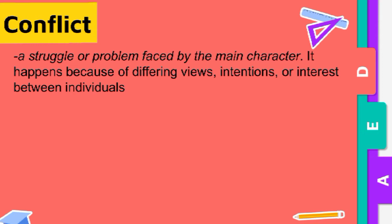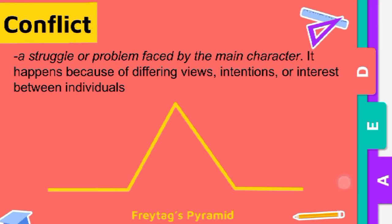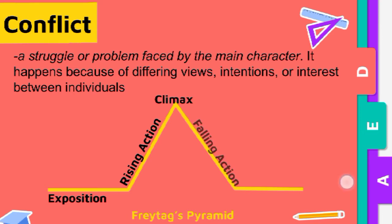Conflict is part of Freytag's pyramid, which consists of exposition, rising action, climax, falling action, and resolution or denouement. In fiction, conflict creates the tension and drives the story forward, and often introduces the rising action.